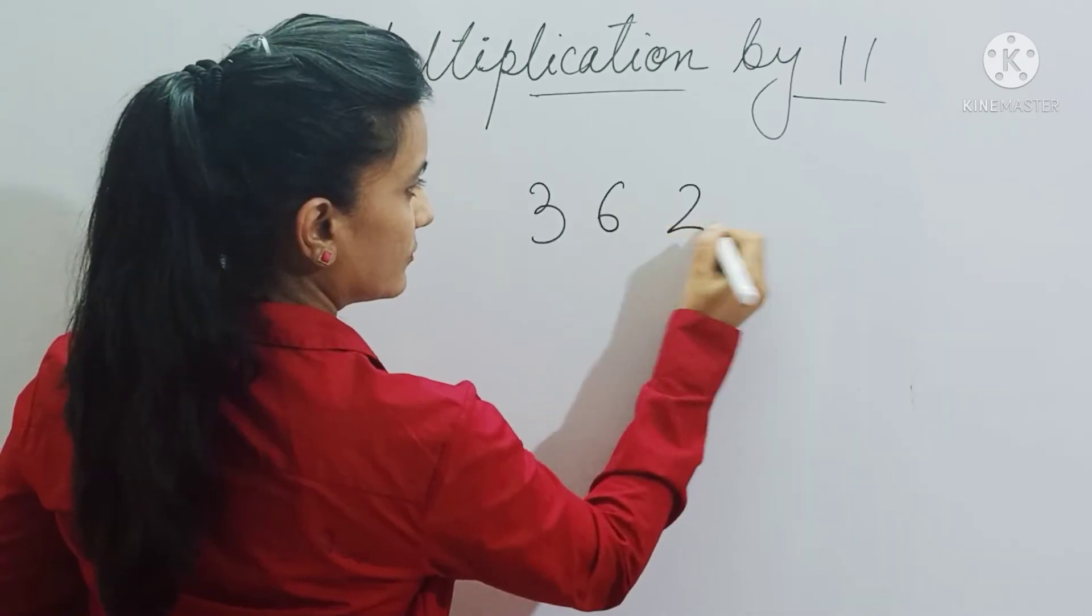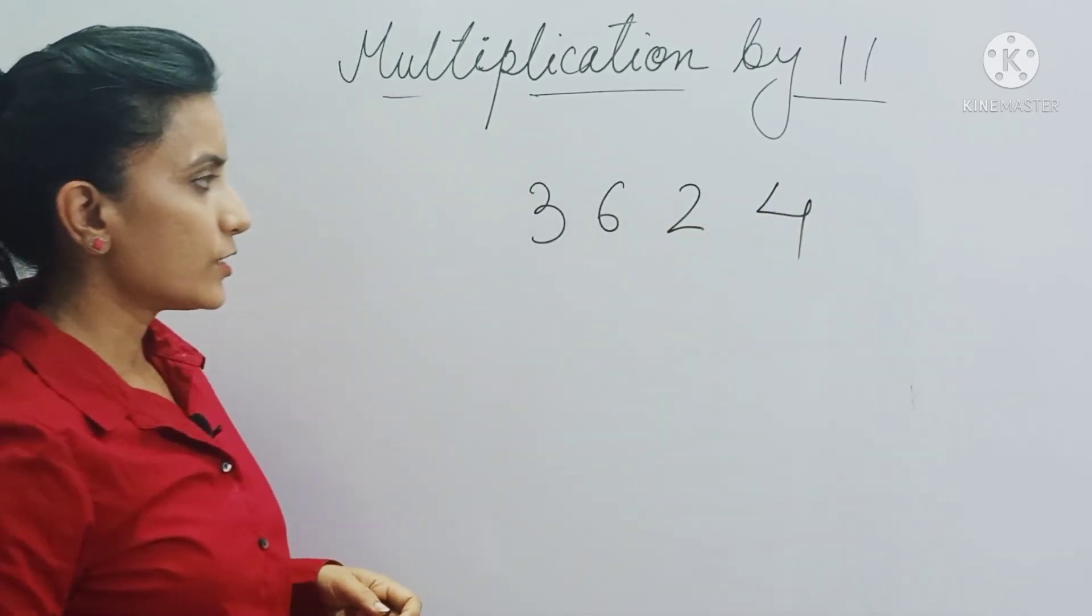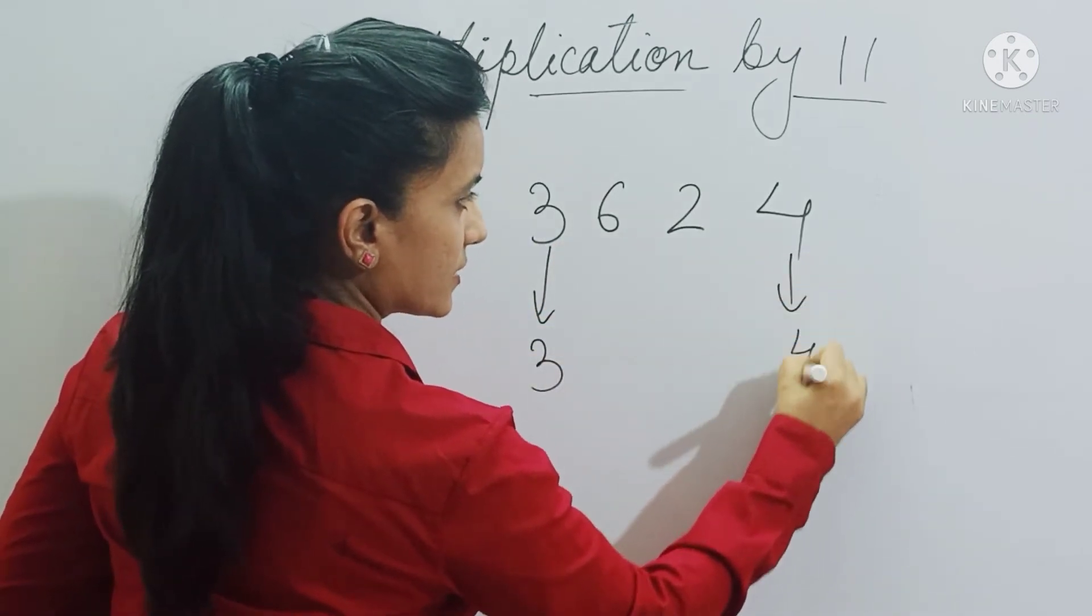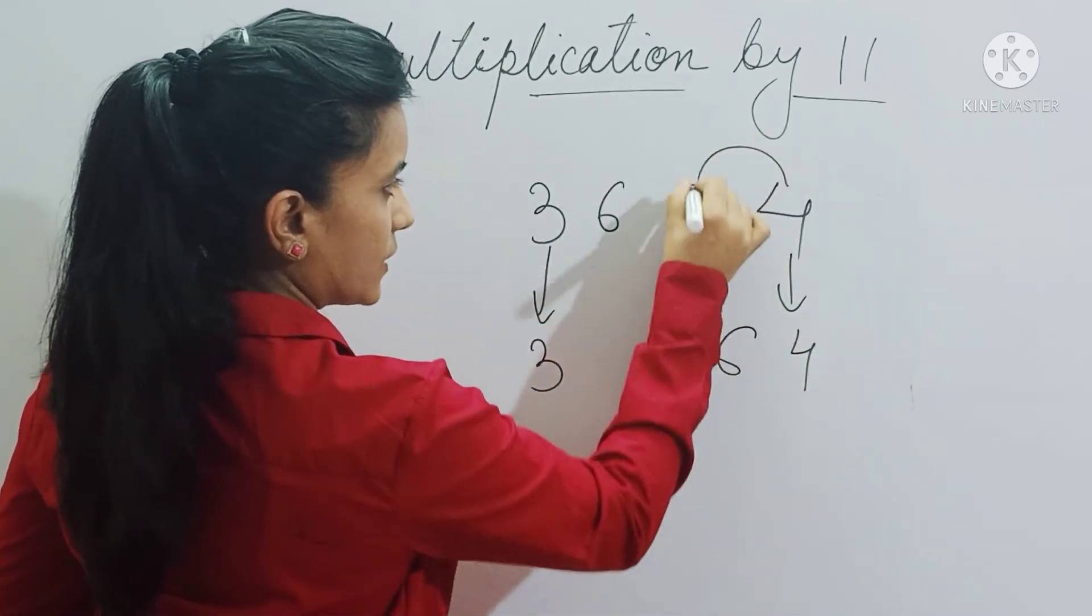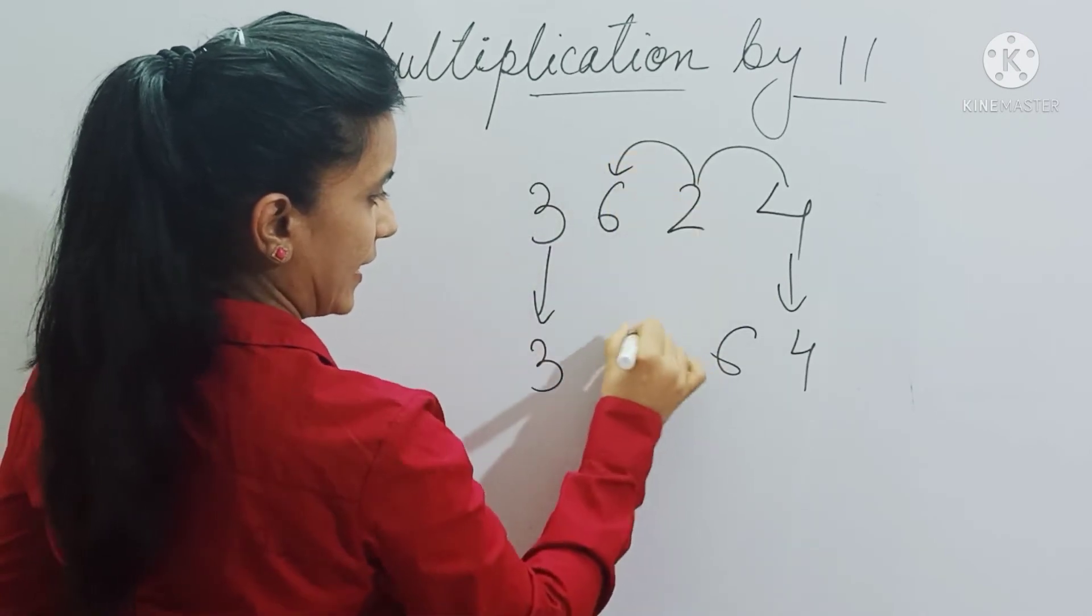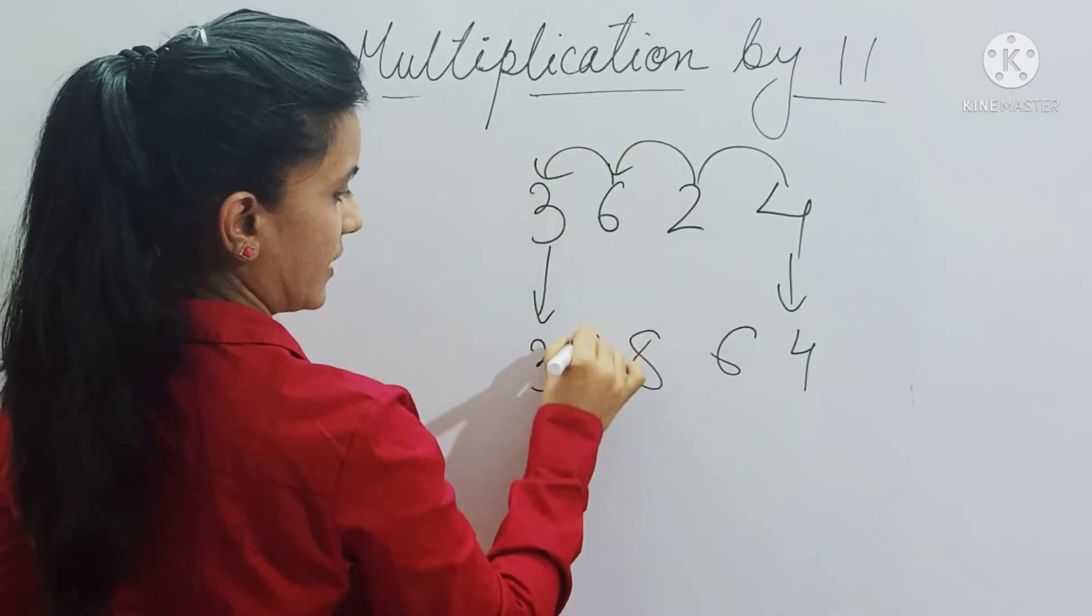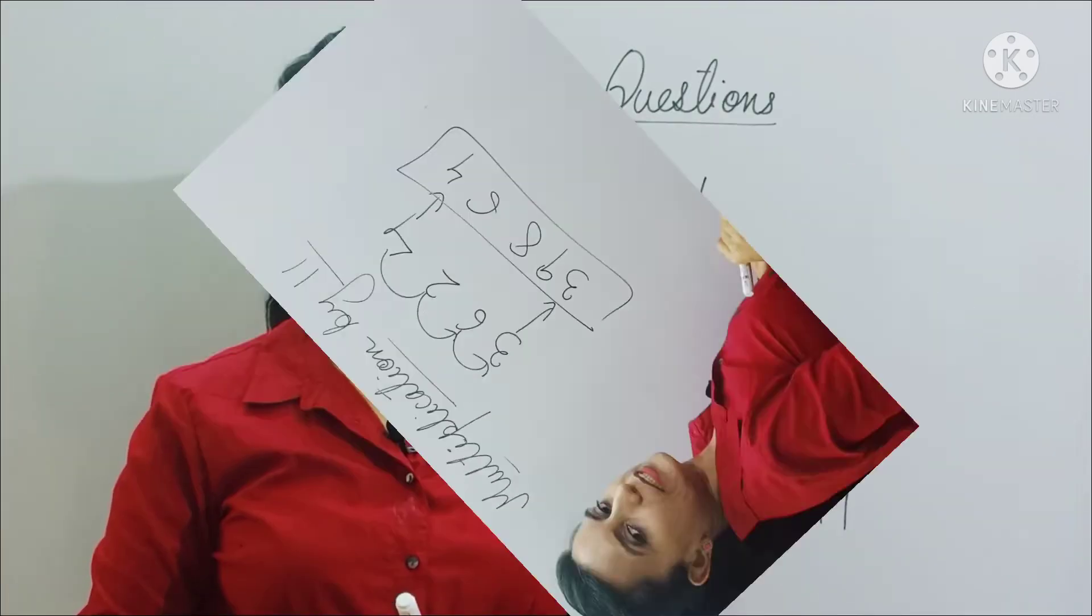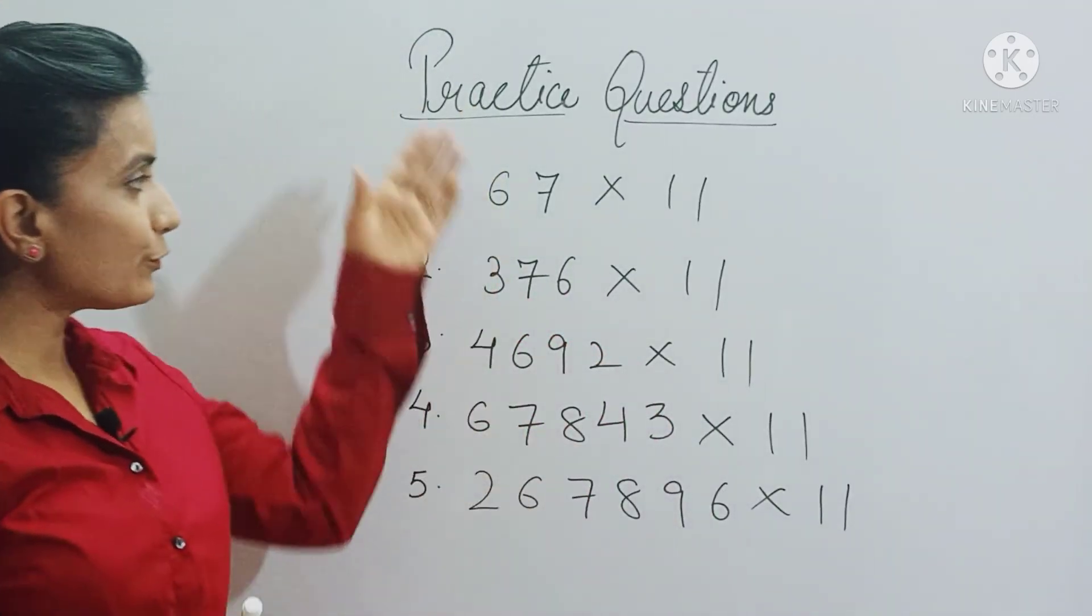Let's do one more example. So copy 3 and 4 as it is. 4 plus 2 is 6, 2 plus 6 is 8, and 6 plus 3 is 9. So 39,864 is the answer. So these are a few practice questions for all of you.